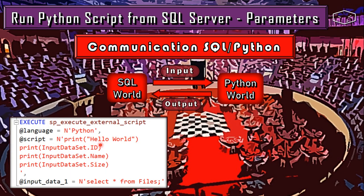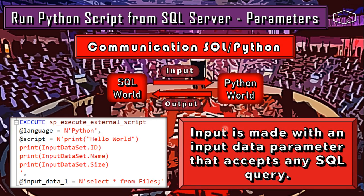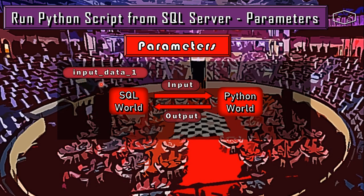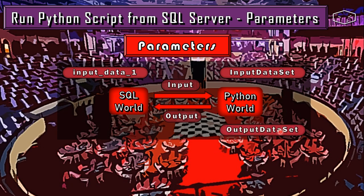If you saw the previous hello world video, you saw input_data_1. Inside the Python script, input_data_1 has a query: SELECT * FROM files. So the input is made with an input data parameter that accepts any SQL query. The input_data_1 in SQL links to input_data_set in Python. Similarly, the output_data_set will be the output. SQL doesn't have an output_data_1 on its side.